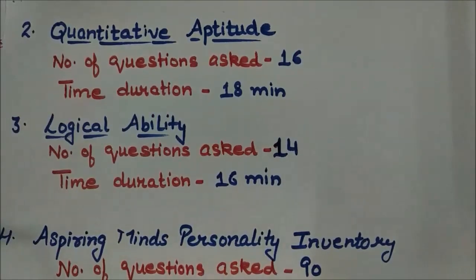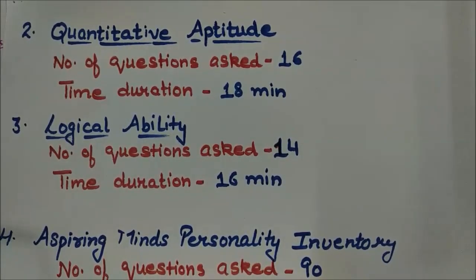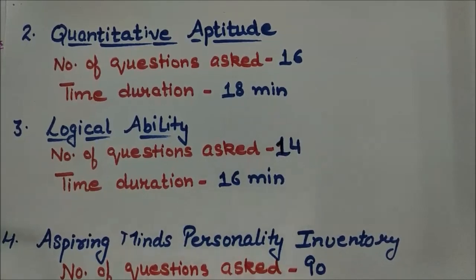The next compulsory module is Quantitative Aptitude. In this section there are 16 questions and the time duration is 18 minutes. Topics include HCF, LCM, time and work, profit and loss, mixture and allegation, and other topics like concepts of geometry, trigonometry, and advanced mathematics.